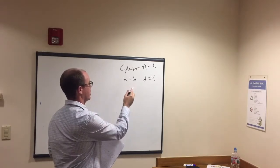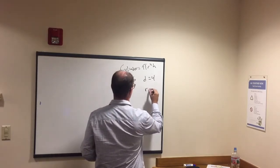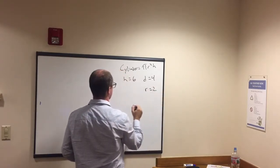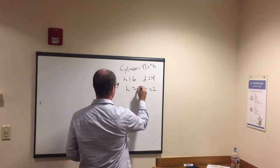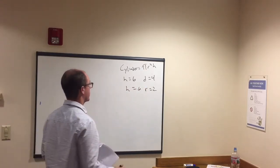We know that diameter is twice radius, right? So that means radius in this question is going to be 2, right? Height is still going to be 6. Okay, so now we have height 6, radius 2. Now we're ready to go solve.